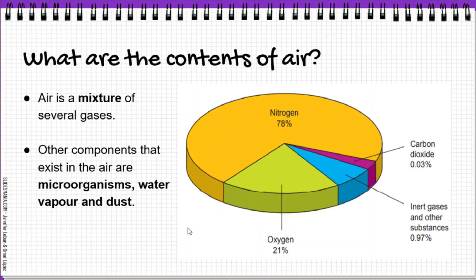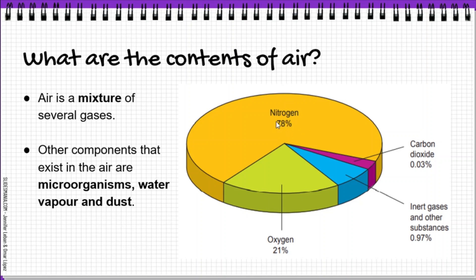So, what are the contents of air? Air is a mixture of several gases: nitrogen, which is about 78%, oxygen about 21%, inert gases and other substances about 0.97%, and the least amount of gas in the air is carbon dioxide, which is about 0.03%. So the biggest amount of gas in the air is nitrogen. Examples of inert gases include helium, argon, and neon.